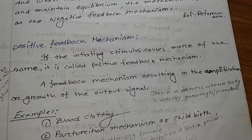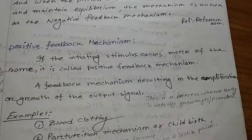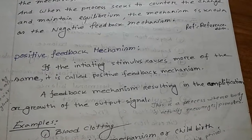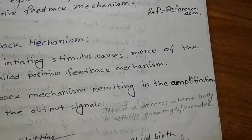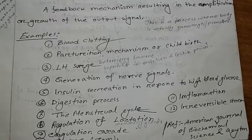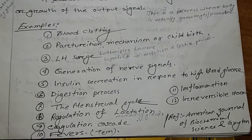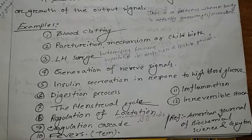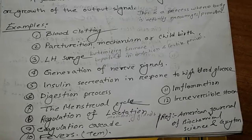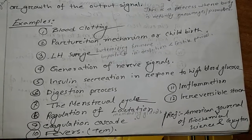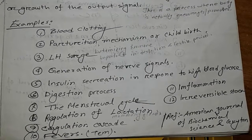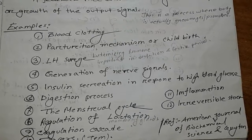A positive feedback mechanism results in the amplification or growth of the output signal. Simply put, this is a process where our body encourages or promotes a change. Some examples of positive feedback mechanism: blood clotting, parturition mechanism, generation of nerve signals, insulin secretion in response to high blood glucose, digestion process, menstrual cycle, regulation of lactation, coagulation cascades, fever, inflammation, and irreversible shock.